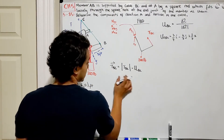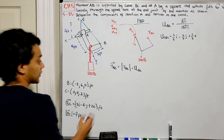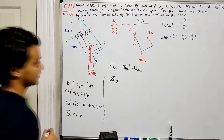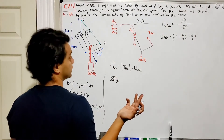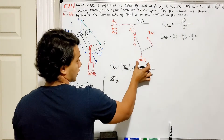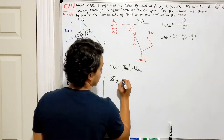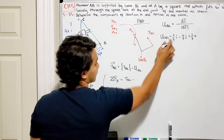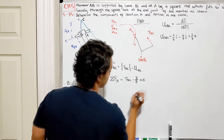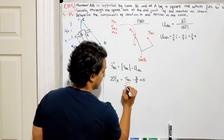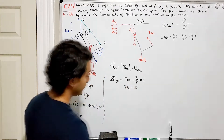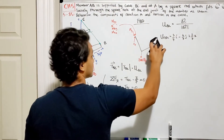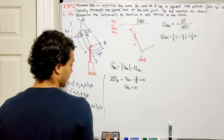Now let's start the summation of forces. For the x-direction, there is no Ax reaction. The 800-pound load acts only in z, so nothing there. The only x-component is TBC times (3/7), and this must equal zero. This tells us that TBC equals zero, so we can eliminate TBC from all equations.